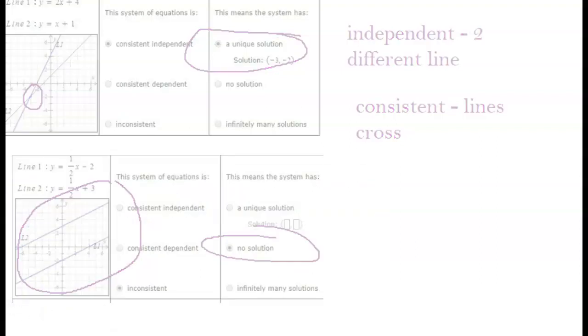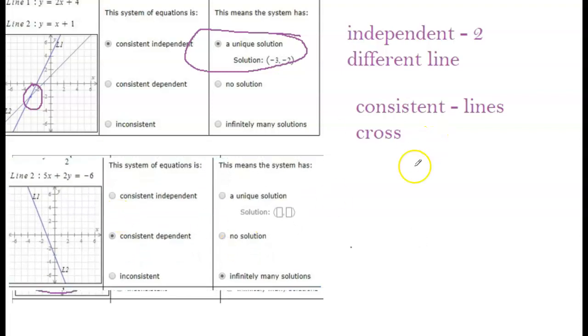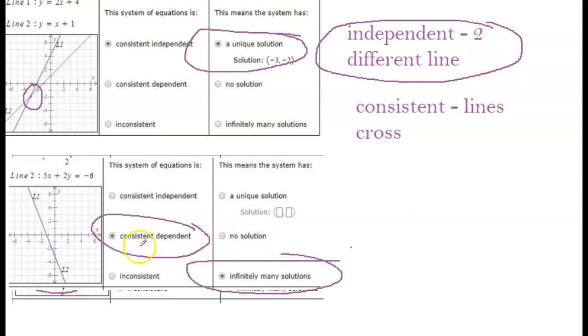The final scenario you can have that you saw in that problem looks something like this. It looks like just one line is being drawn. And that's because the two lines are exactly the same. They lay right on top of each other. So it is consistent. The lines cross. They touch everywhere. But it would be called dependent. If independent means you have two different lines, dependent means you have that one line. Both lines are the same. You really just have one line. So this type of system would be consistent. They cross. But it's dependent. And there's infinitely many solutions because every point on one line is also on the other line. So there's infinite number of points where they cross.